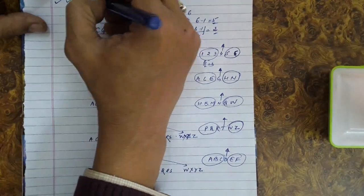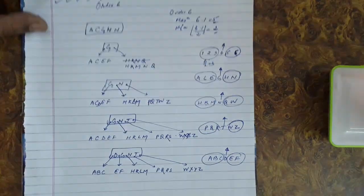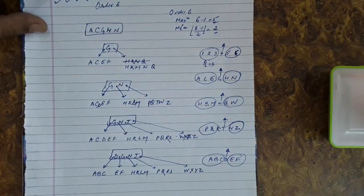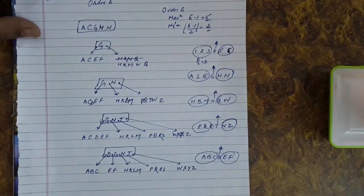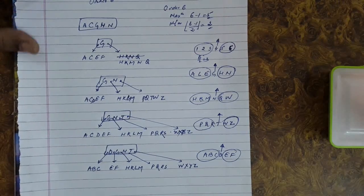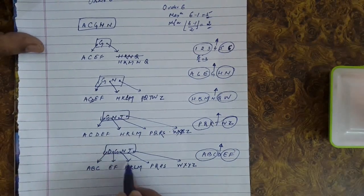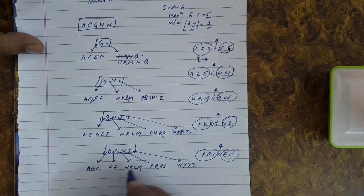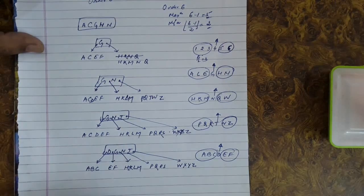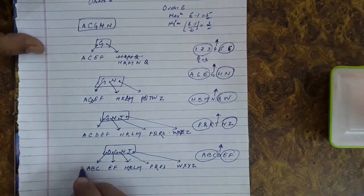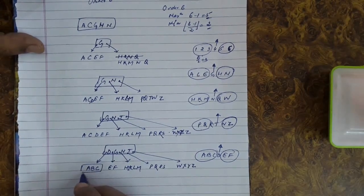Finally, we insert I, which was the only remaining key. I is placed between G and H, going into the H node area — G, H, I. There is no violation, and this is the final B-tree structure.